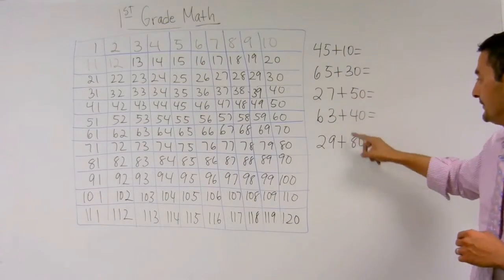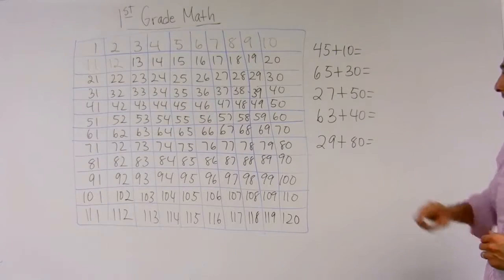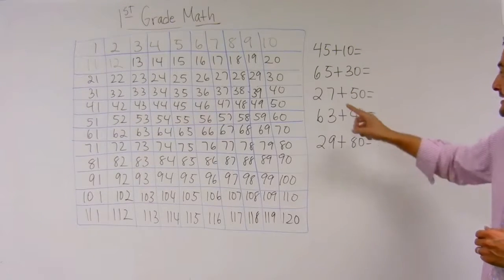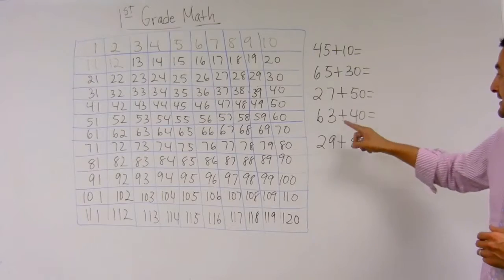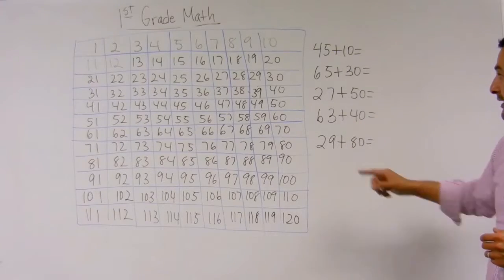So I've got some problems here for you: I've got 45 plus 10, 65 plus 30, 27 plus 50, 63 plus 40, and 29 plus 80.